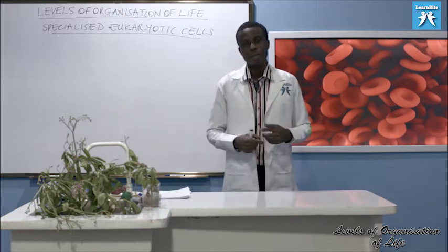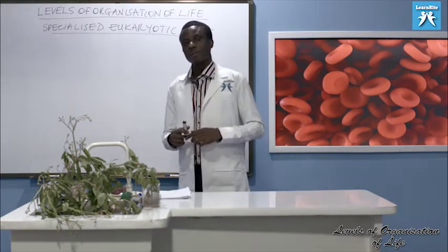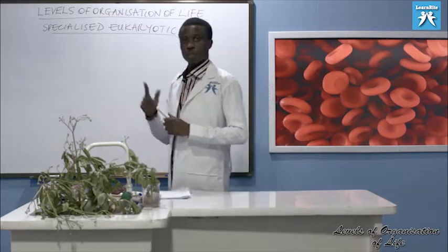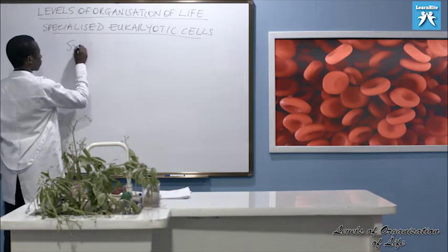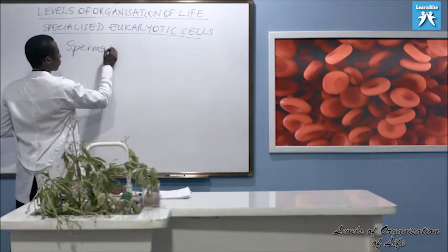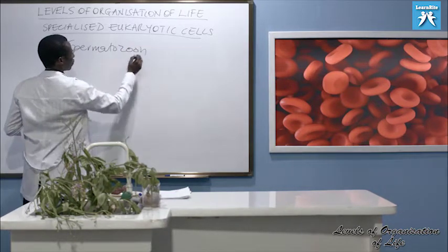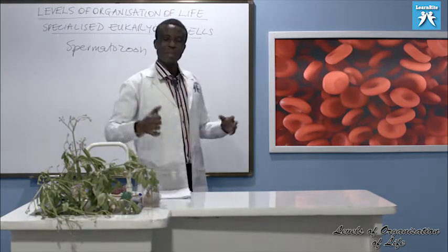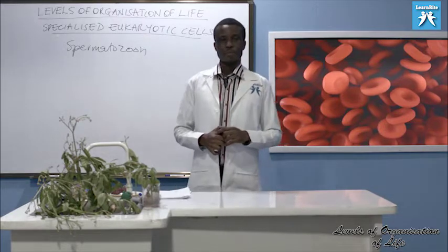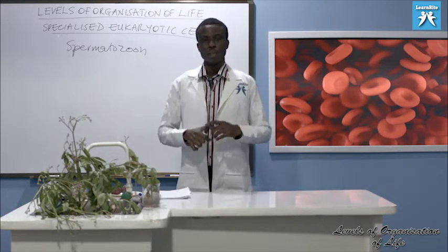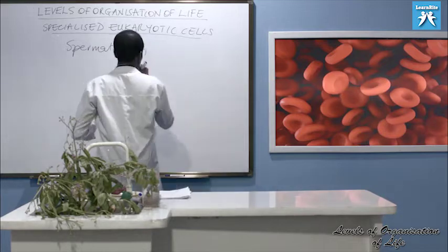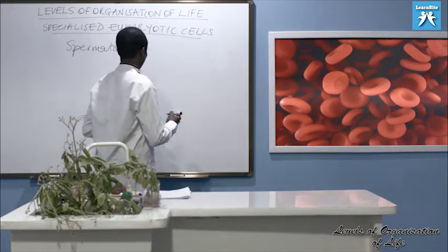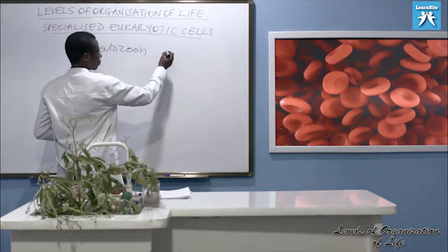Let's look at the sperm cell. The full name is spermatozoon. The human sperm cell is produced in the testis. Let's draw it nicely and look at how it's adapted to perform its function.